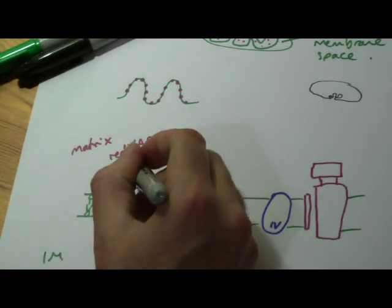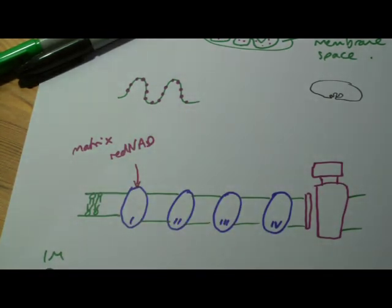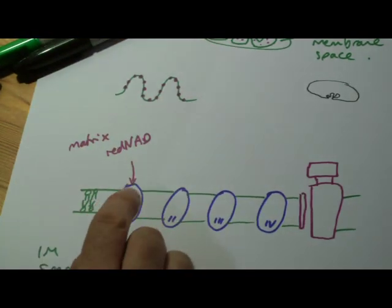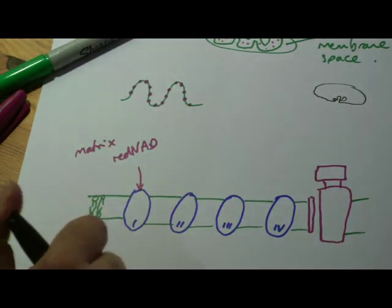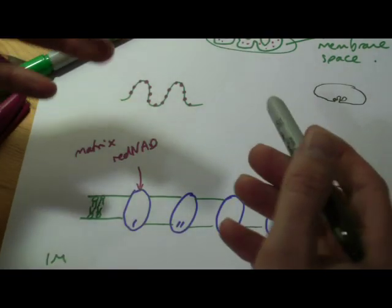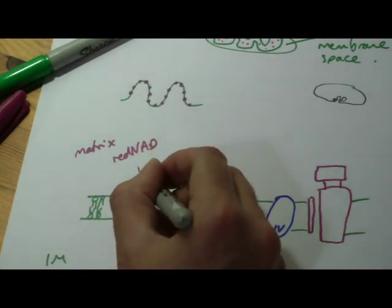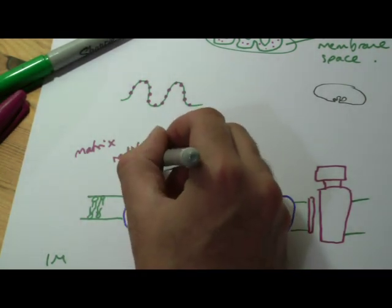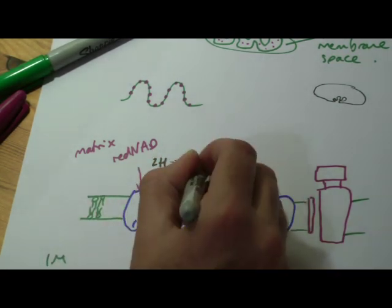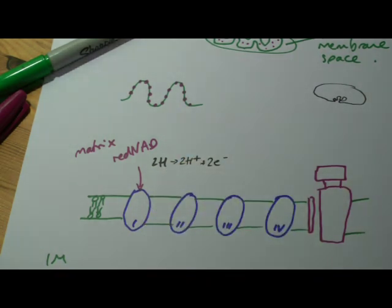Now what happens is, as the reduced NAD releases its hydrogens, its two hydrogens, those hydrogen atoms get split. Don't call them hydrogen molecules, hydrogen atoms are split. And if you want to look at this, the technical name for this is called coenzyme Q reductase, or sometimes NAD dehydrogenase, an enzyme that takes hydrogens off NAD. What it's going to do is it splits those two hydrogens into two hydrogen ions plus two electrons.